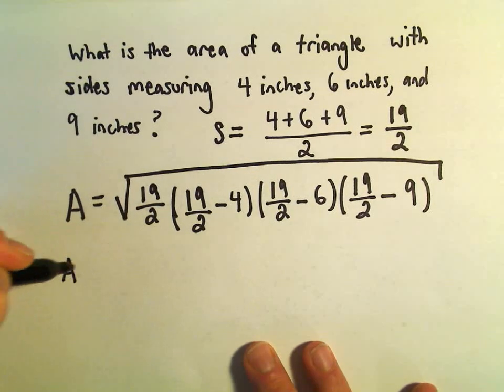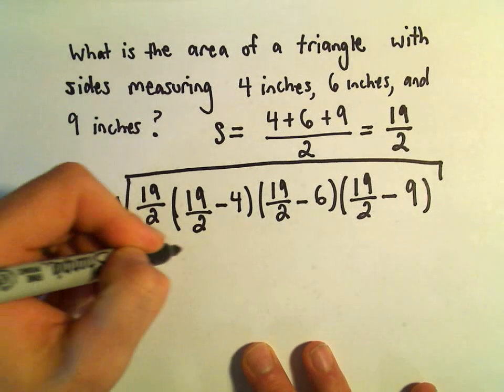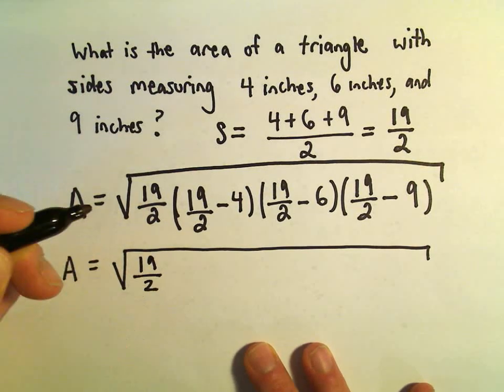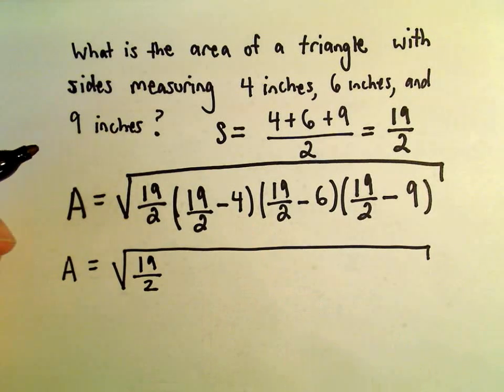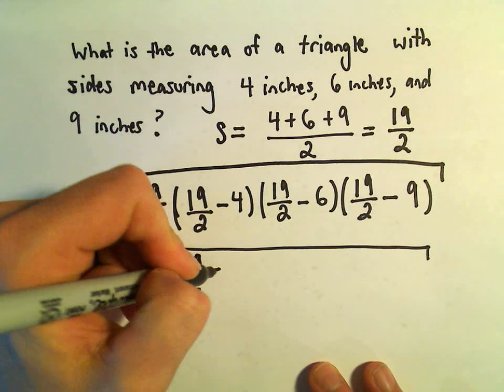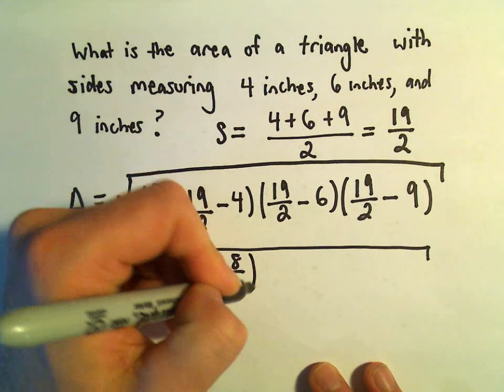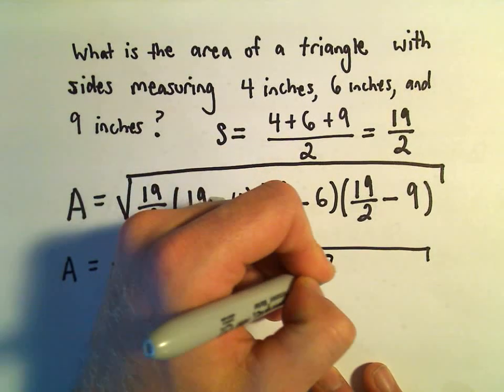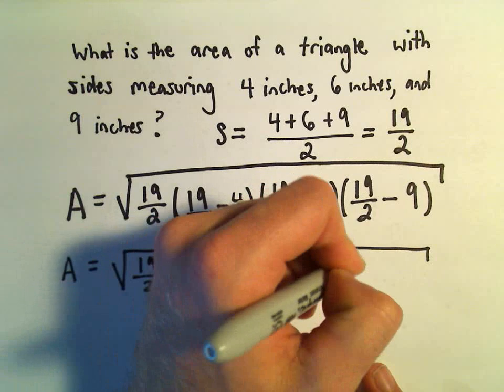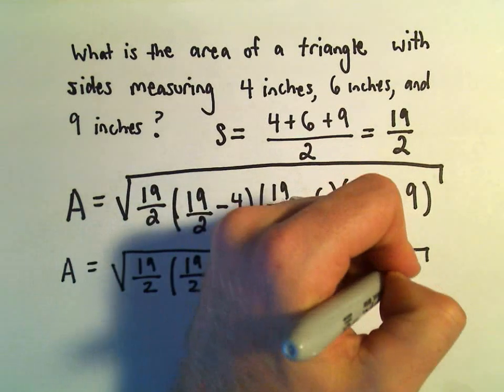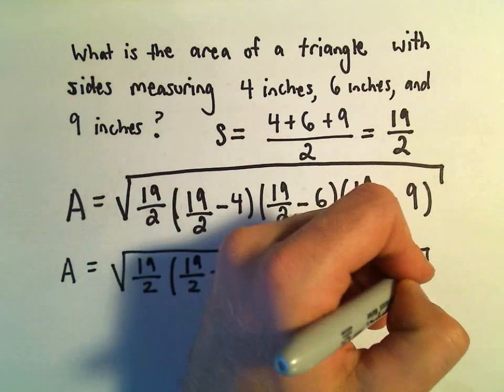All right, so hopefully nothing here too terrible. Let's see, so we've got 19 over 2. We could always make the 4 into an 8 over 2. So I guess let's write this one all the way out. Minus 8 over 2. We've got 19 over 2. We could make the 6 into 12 over 2. We've got 19 over 2. We could subtract away, this would be 18 over 2.